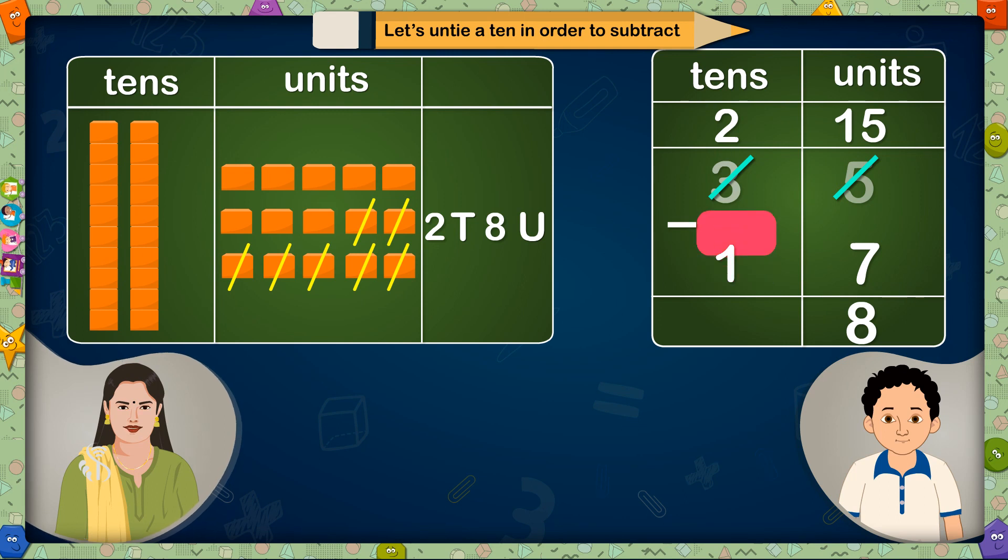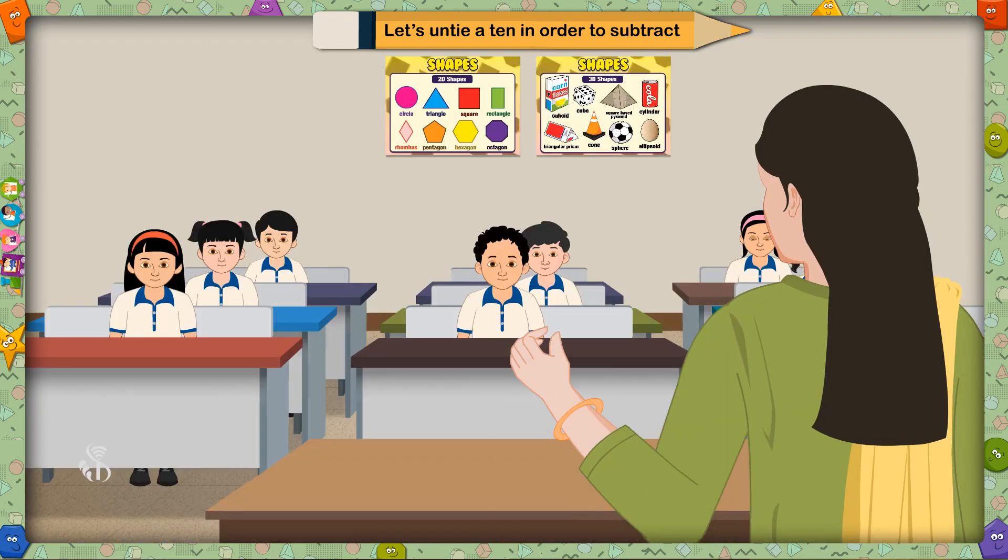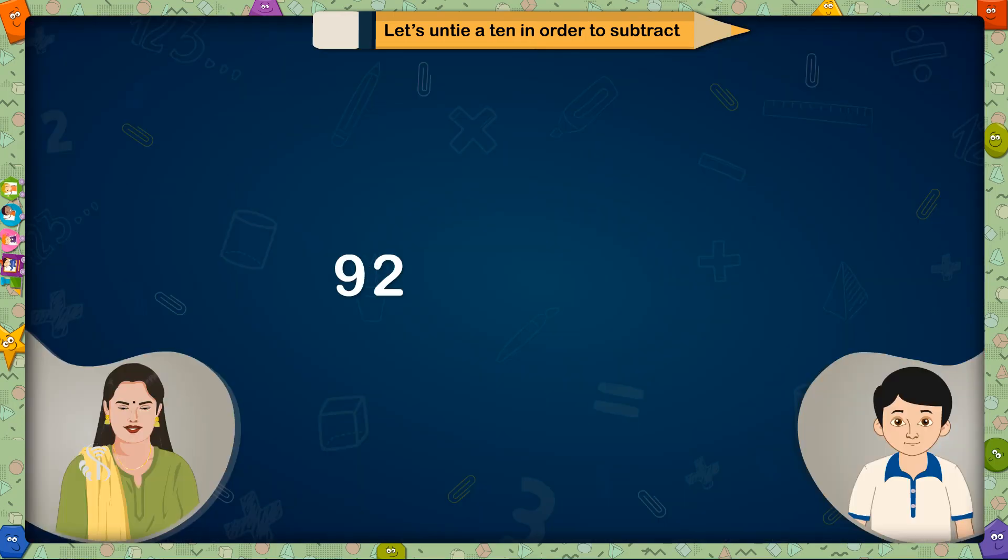And if we reduce 1 ten from 2 tens, 1 ten will be left. So 35-17 is equal to 18. Now you have to tell me how to solve the next sum.